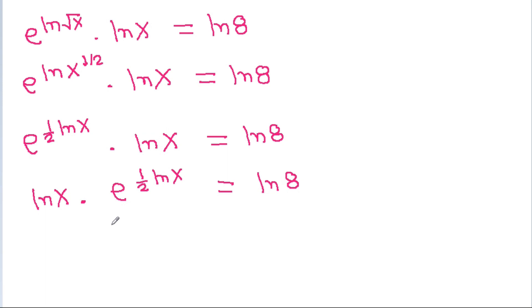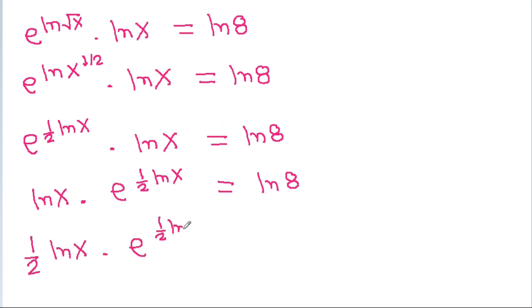If we multiply both sides by 1 by 2, then we get 1 by 2 ln x times e power 1 by 2 ln x is equal to 1 by 2 times ln 8.